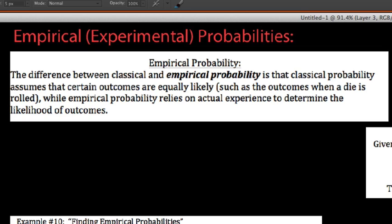Or giving birth to a child and it being a girl or a boy, even though we can look at the numbers and say that it's not exactly 50%. But those are theoretical probabilities, whereas experimental probabilities or empirical probabilities assume that certain outcomes are not so equally likely.